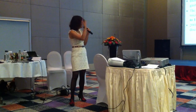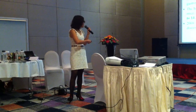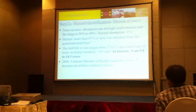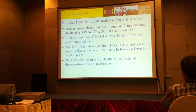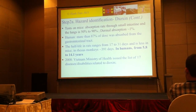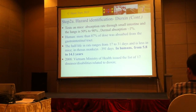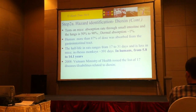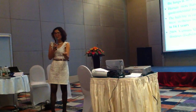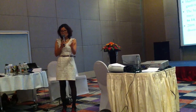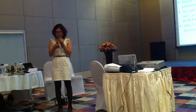In humans, the half-life is also quite long — ranging from 6 to 14 years to decompose half of the dioxin in our body. Women can excrete dioxin mainly through breastfeeding, so the dioxin will go to the children.